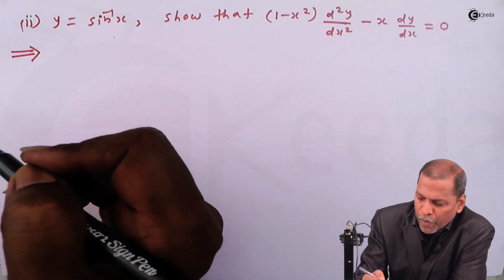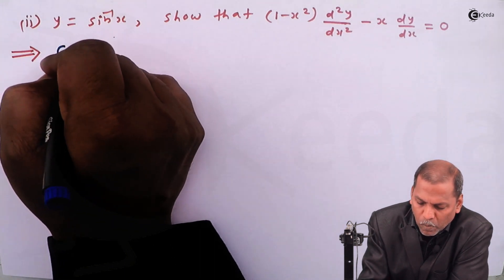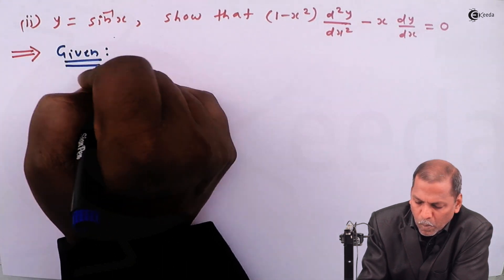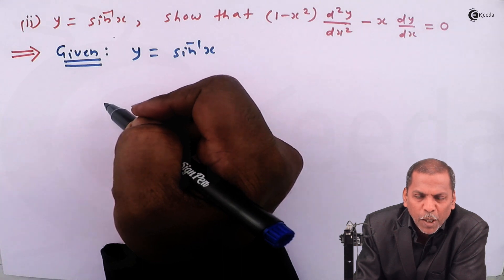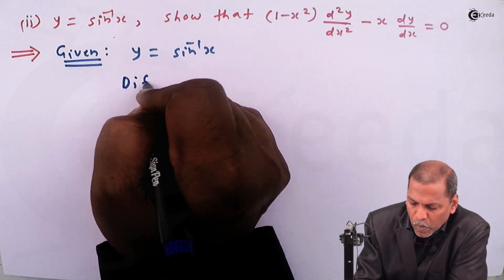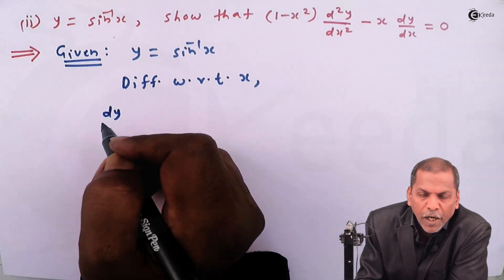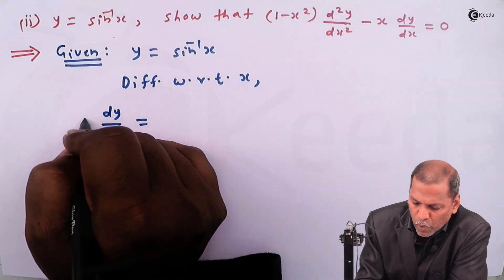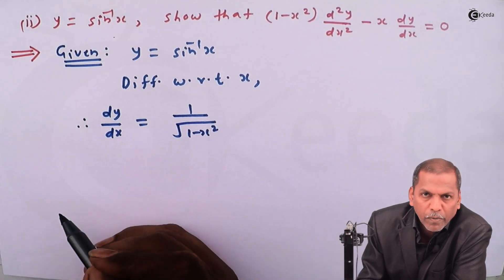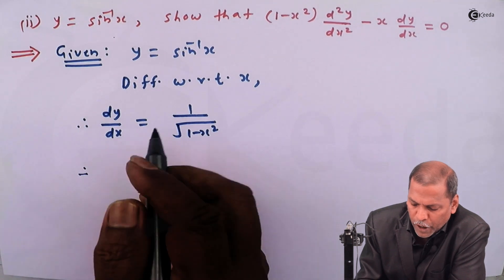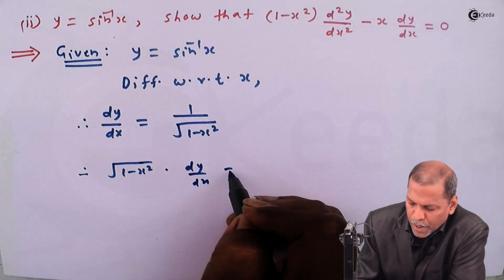The solution is quite simple. We start from the given that y equal to sine inverse x. Now differentiating this function with respect to x, we get dy/dx equal to the derivative of sine inverse x, which is 1 upon under root 1 minus x squared. Therefore, the next step will be: root of 1 minus x squared into dy/dx is equal to 1.